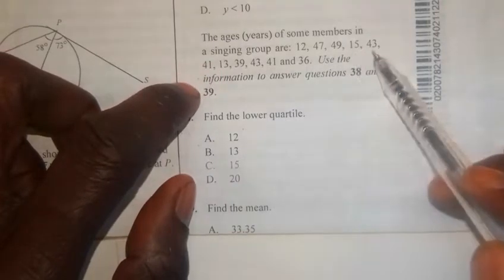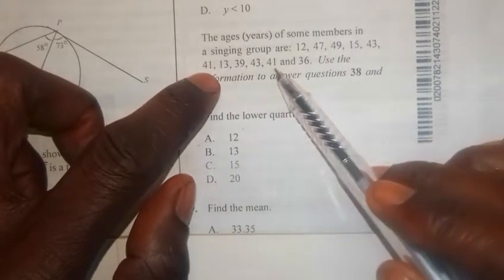Now, the question here says, the ages in years of some members in a singing group are 12, 47, 49, 15, 43, 41, 13, 39, 43, 41, and 36.